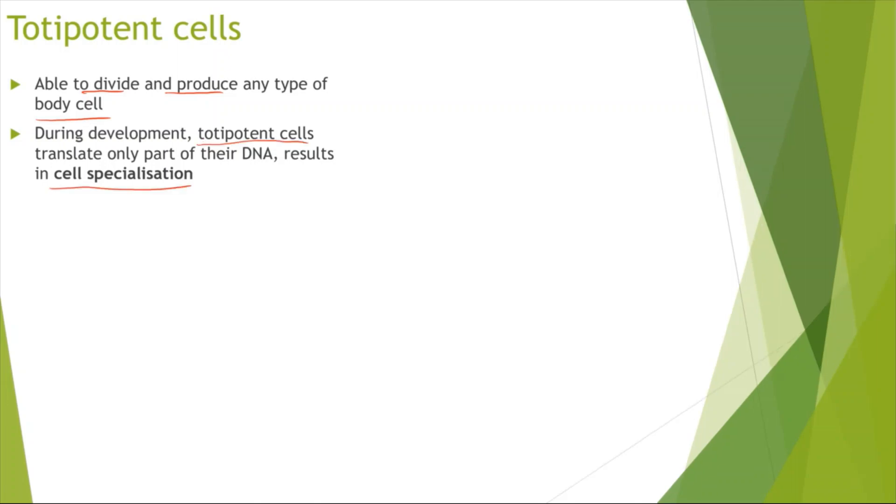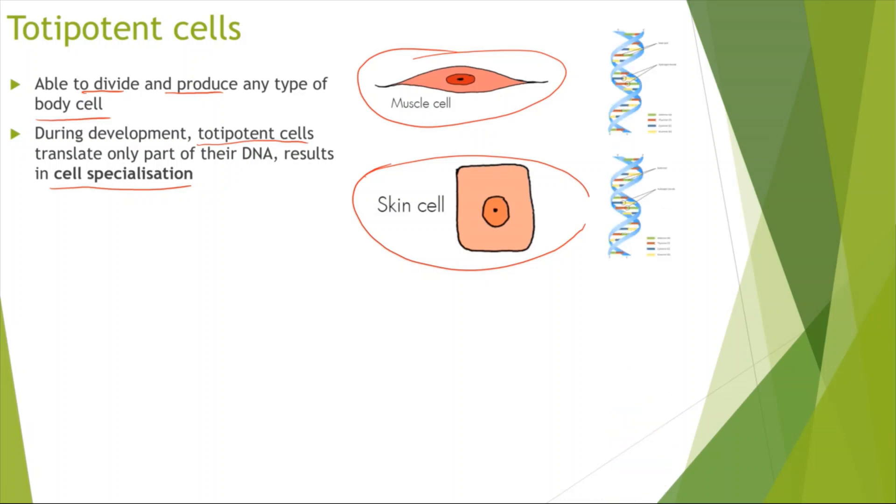Now what you need to understand first is if we have any type of body cell, so if we were to just compare two types of body cells, we might get a muscle cell and we might get a skin cell. Now if we were to look at the genes of these two cells they would be exactly the same. Now this is the misconception that forms, so students ask how can they have the same genes when they look different, when they have different proteins. Now this is where cell specialization and turning genes on and off comes in.